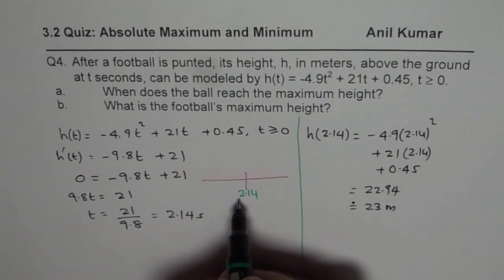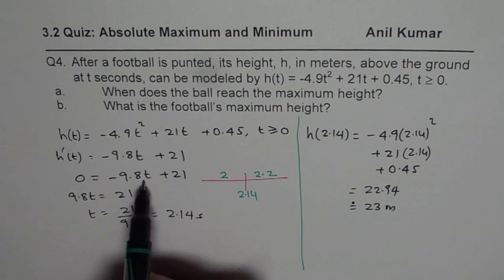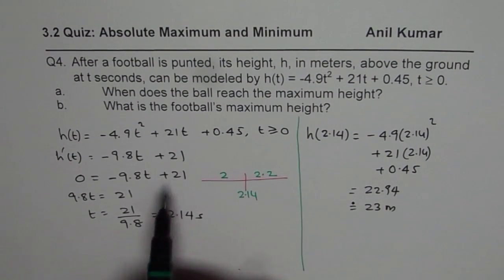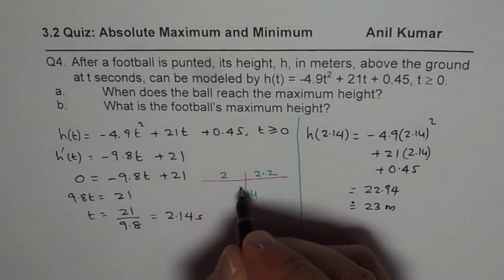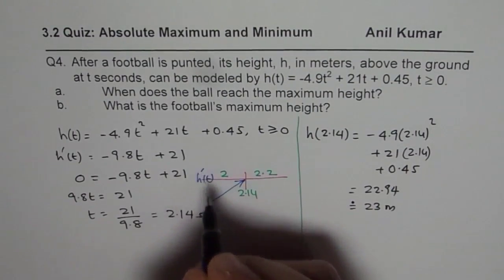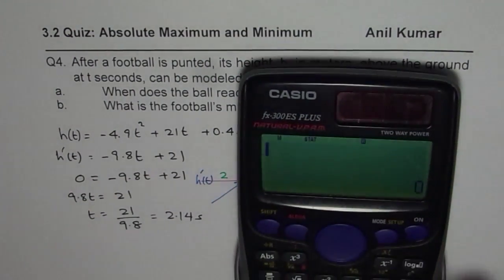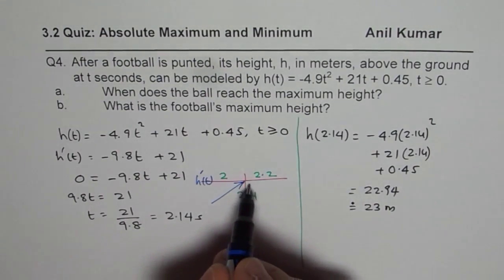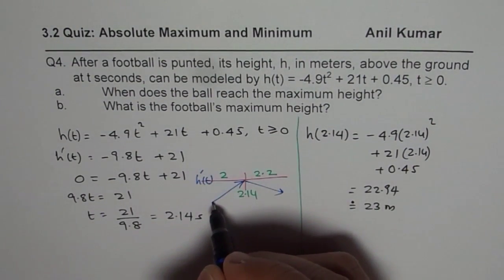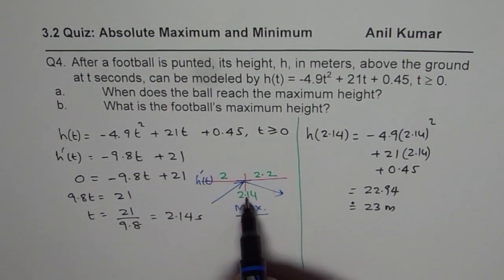Take a test point less than 2.14, for example t = 2, and another test point greater than it, say t = 2.2. Substituting t = 2: 2 × 9.8 = 19.6, which is less than 21, so we get a positive value — the rate of change is increasing on the left. Substituting t = 2.2: 21 - 9.8 × 2.2 = -0.56, a negative value. So the rate of change changes from positive to negative, and is 0 at t = 2.14, confirming this is a maximum.